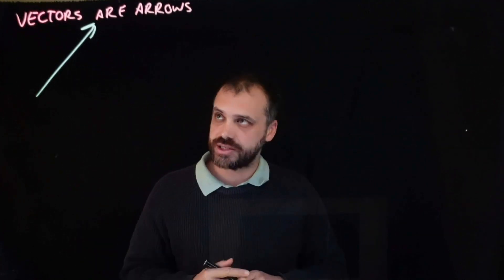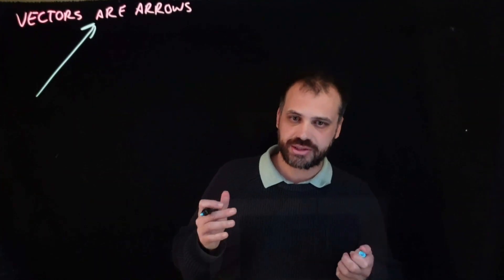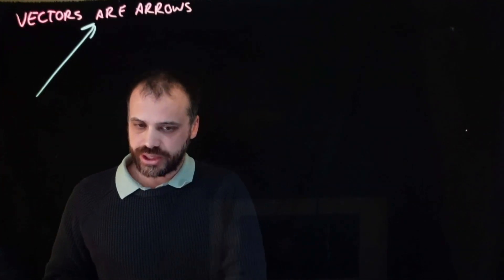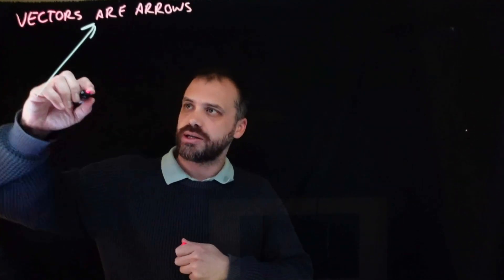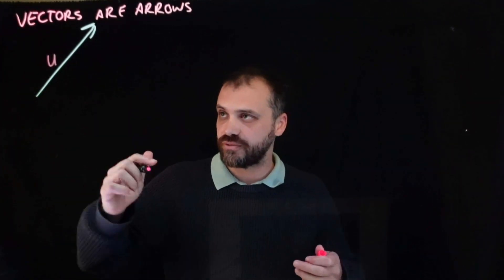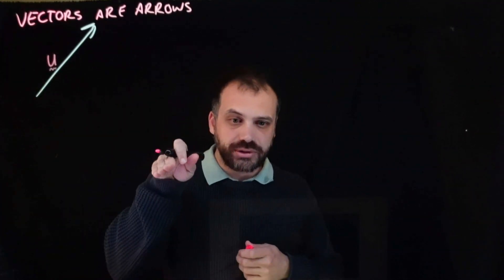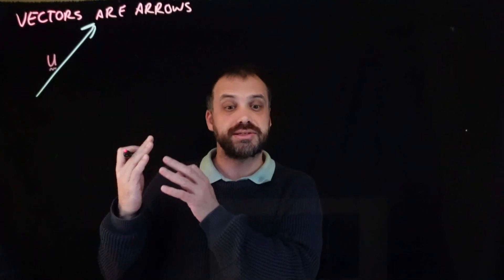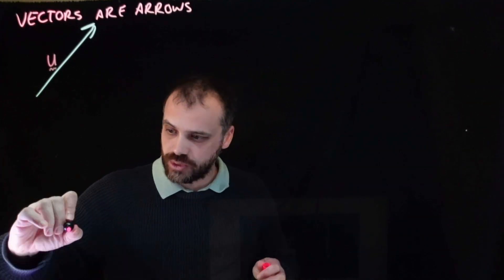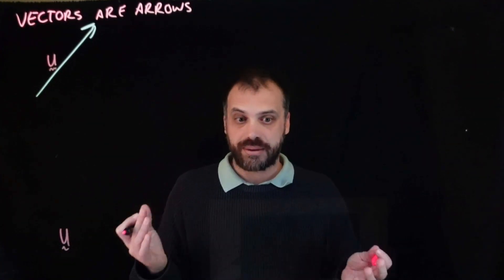So let's talk about this vector in particular. If we want to be able to talk about vectors, it's useful to be able to label them. So we're going to label this one as the letter U — that's usually the letter you would use for a vector — but we're going to put a little squiggle underneath it. The little squiggle says: this is a vector. So if you see the letter U with a little squiggle underneath it, that means vector.